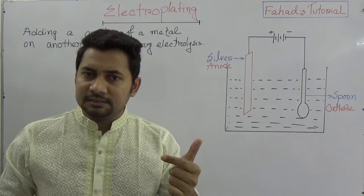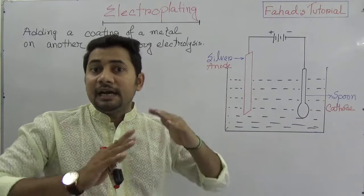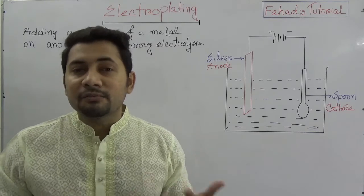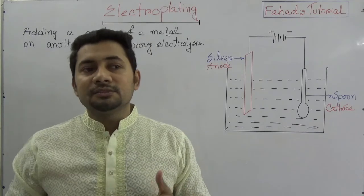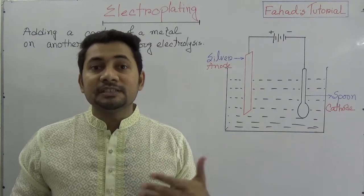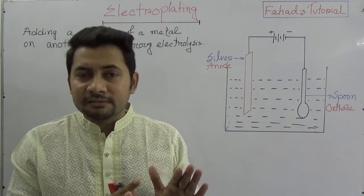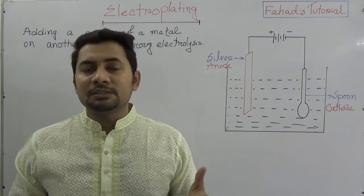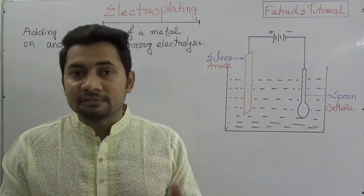We know what electrolysis is and we know the mechanism of it. Now, this is the practical version showing how we can actually prevent the degradation of metal and how we can increase the brightness of a metal. More reactive metals that are directly exposed to air or vapour can change, and even rust and decay can happen. To prevent these degradations and decay, electroplating can be another option. We can do electroplating to increase brightness and also to prevent degradation.